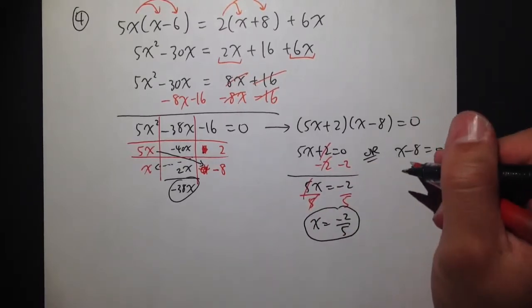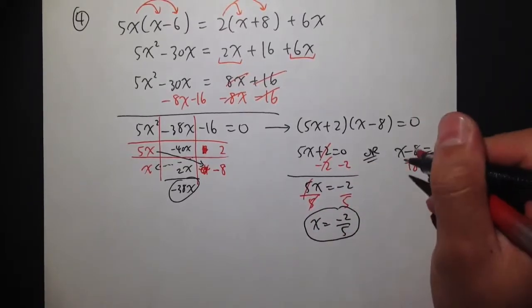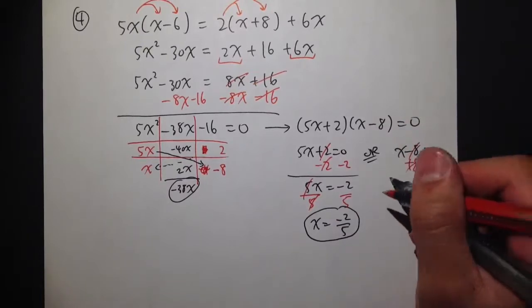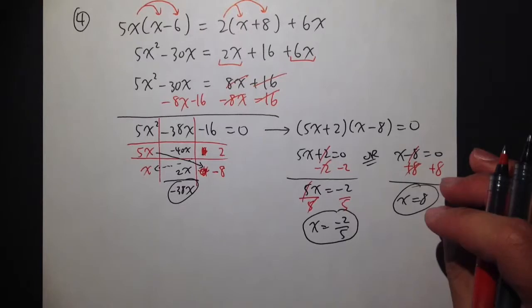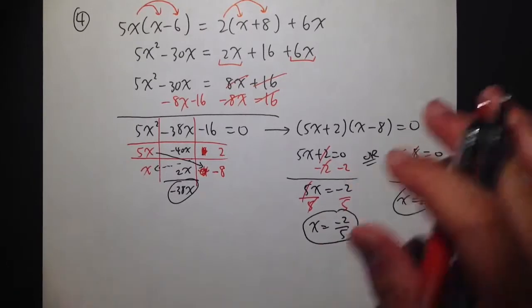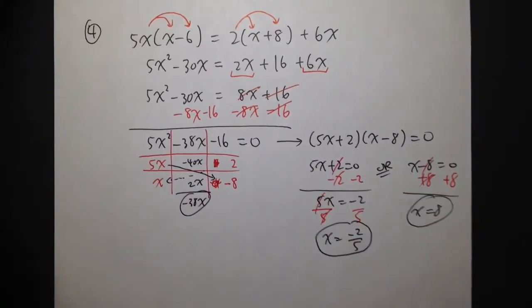And for the second answer, plus 8 plus 8. And I think it's just a coincidence that the example I picked so far, the second answer is usually like just a whole number. But it's not usually the case. Okay? And I'm going to make it happen. I think it's fine. All right. Thank you.